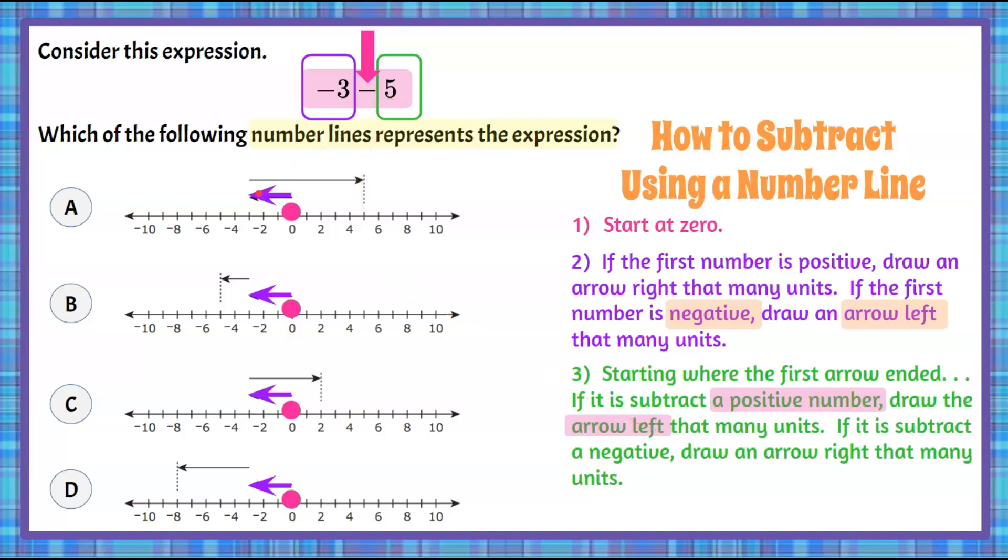So we're going to start from where our arrow left off, and we're going to go left five. So we can already see that choice A is going to be eliminated, because they went to the right five instead of to the left. So let's eliminate A. Down here, we're going to start where this arrow left off. We're going to go left five units. We can see that they didn't do that. So we're going to eliminate choice B.